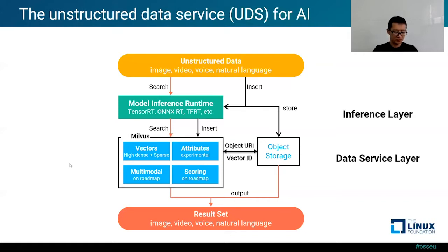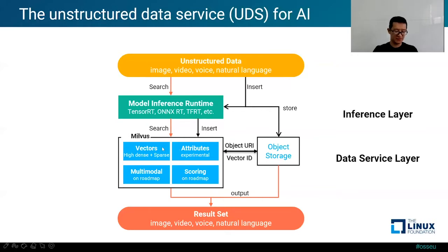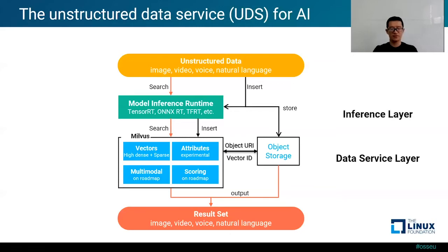At present, Milvus already has built-up vector analysis capability and we are constantly improving and enhancing it. The attribute filtering function should be available by the time you see this video. Multimodal search and scoring search are on the roadmap and will be given higher priority in a future release. Eventually, Milvus is not just positioned to be a high-performance vector search engine — we want to build a comprehensive infrastructure software for unstructured data service based on Milvus.